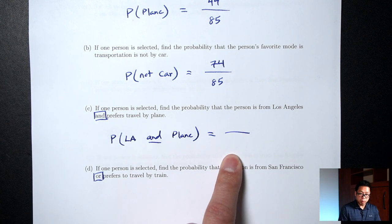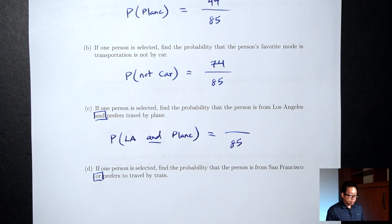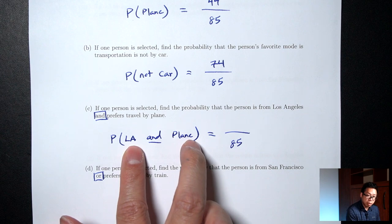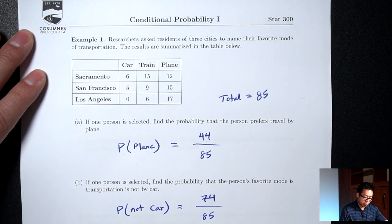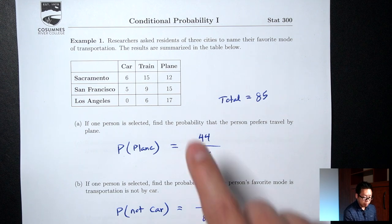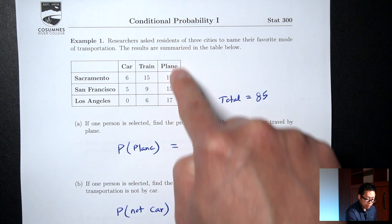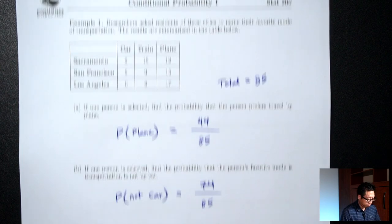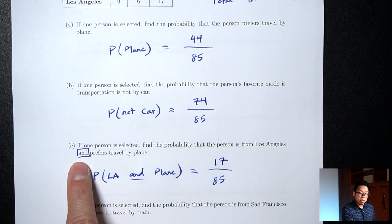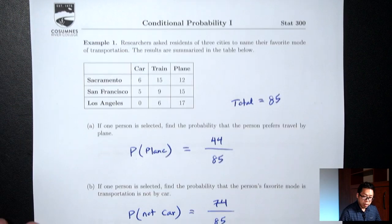How many people are from Los Angeles and at the same time like plane? That'll be these 17 people — they are from Los Angeles and they said plane was their favorite. So the answer is 17 over 85. As a tip, when you're looking for 'and' probabilities, it should just be a single number in your table.